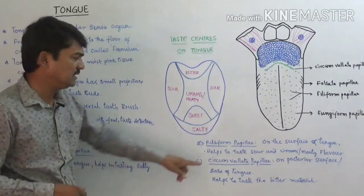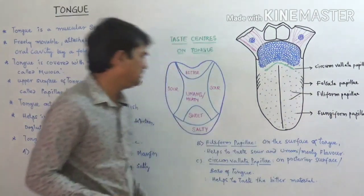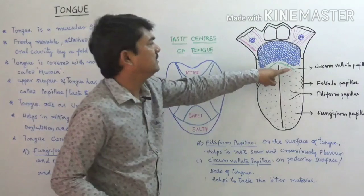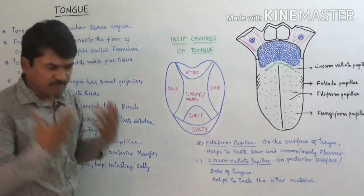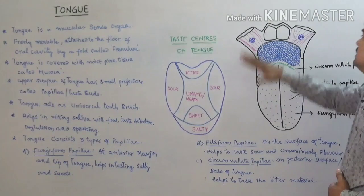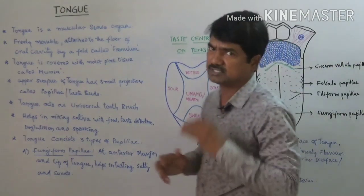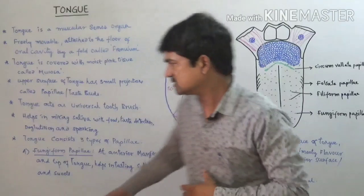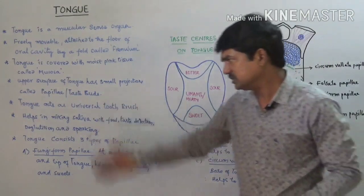The third and most important type is circumvallate papillae, located on the posterior surface or base of the tongue. They mainly help to taste bitter material — when a person consumes something bitter, the taste is identified at the base of the tongue by the circumvallate papillae. These structures are very important for partial digestion. The tongue also provides enzymes like the tyalin enzyme, and plays roles in mixing saliva with food, taste detection, deglutition, and speaking.